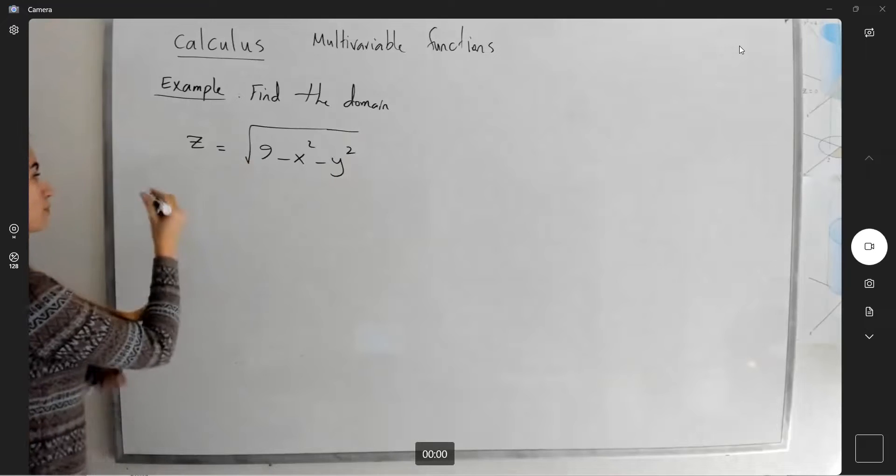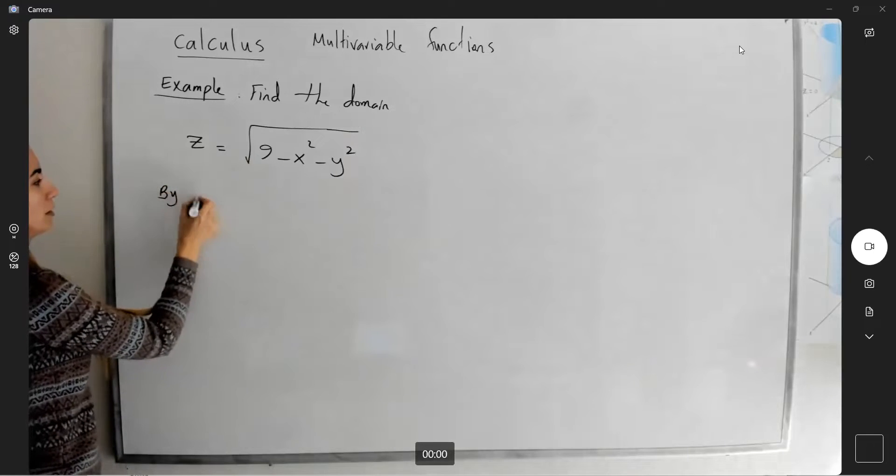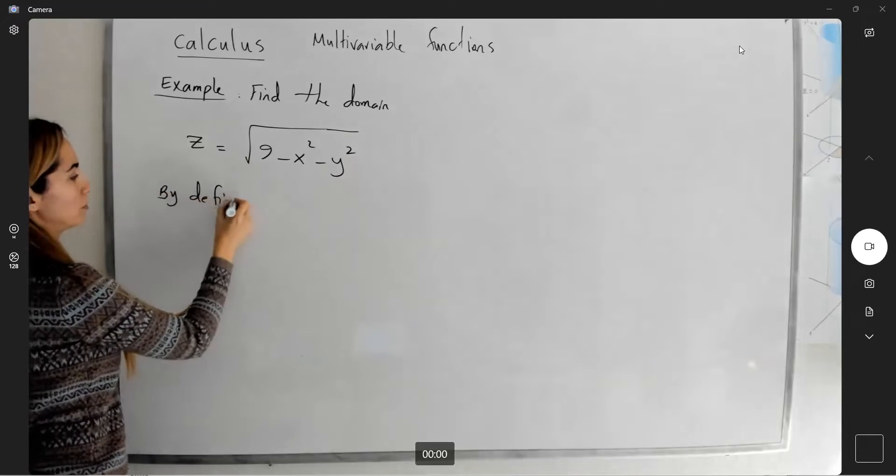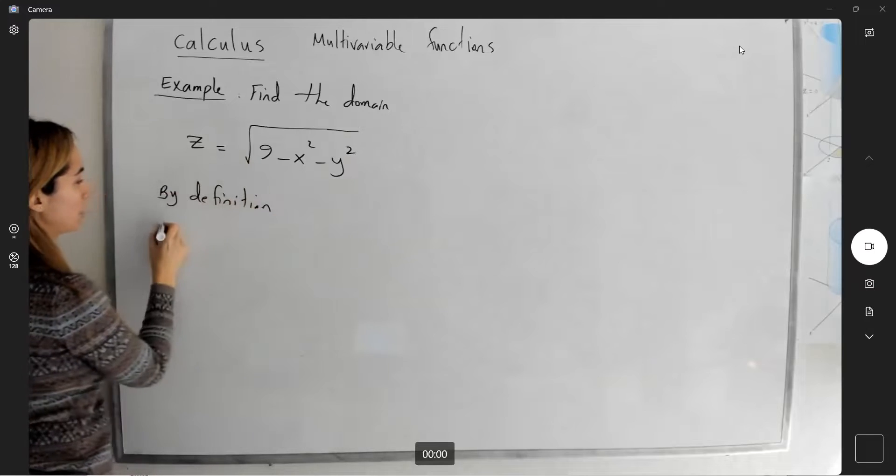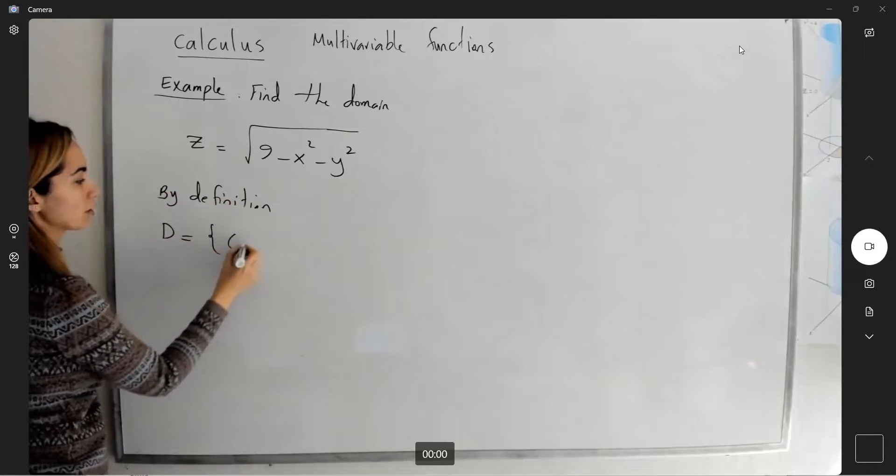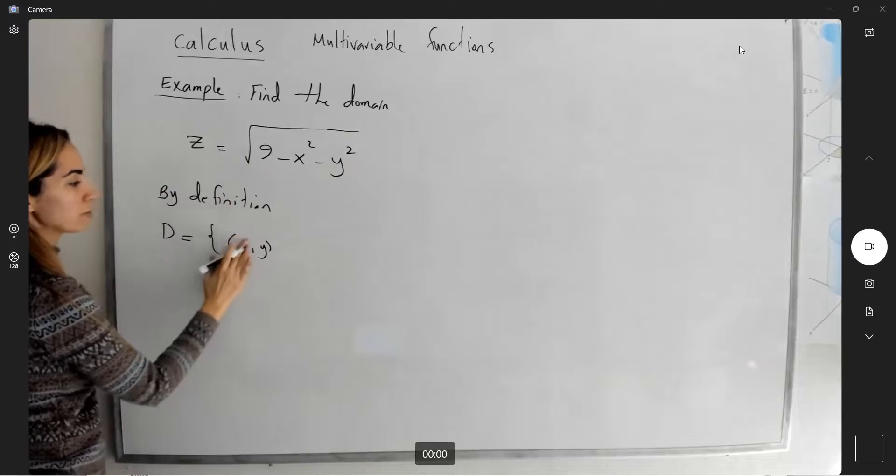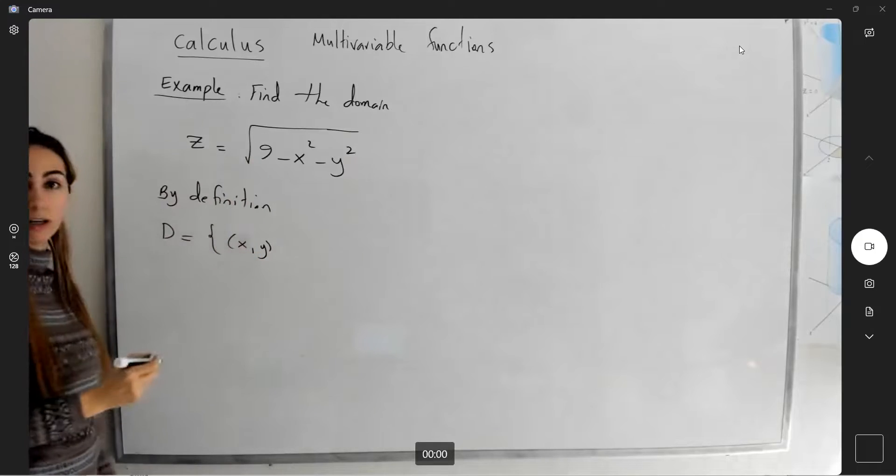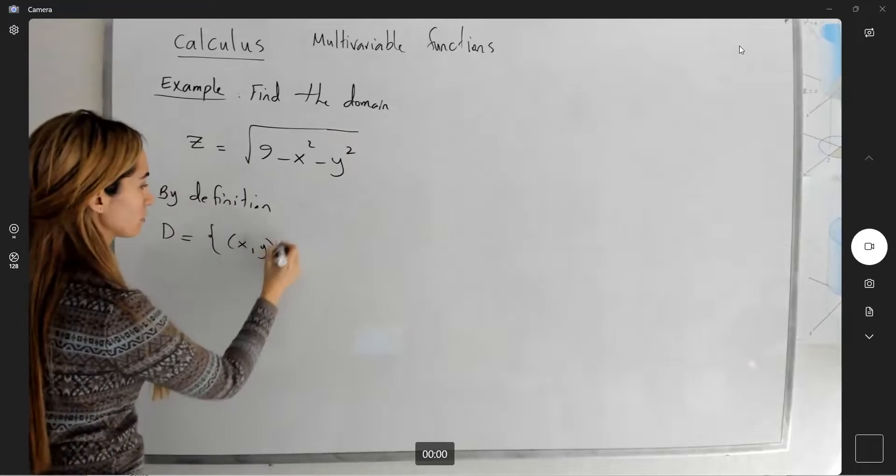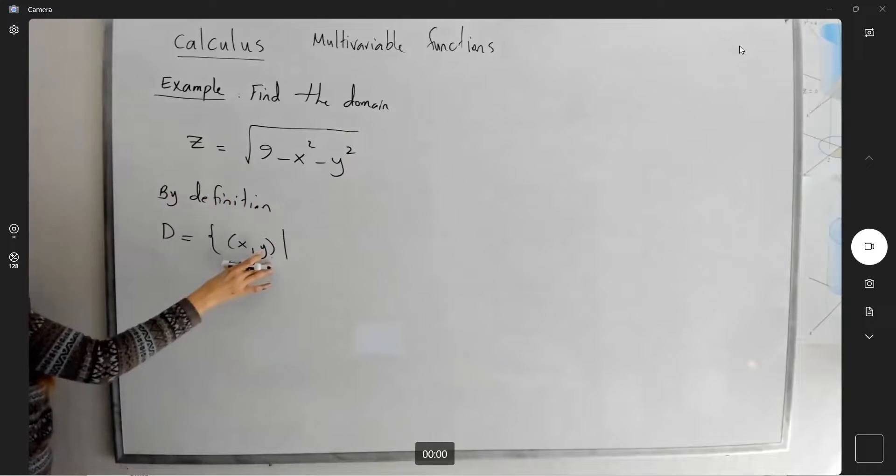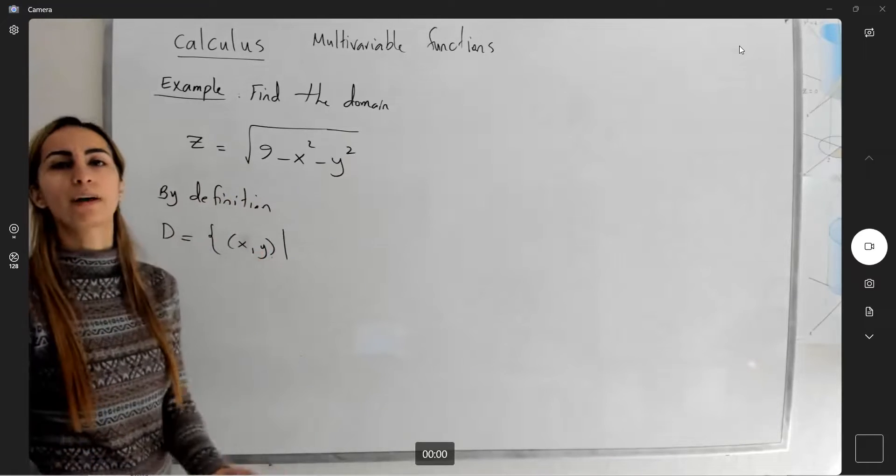So let's go back to the definition. By definition, the domain is equal to the set of all ordered pairs, like x and y, such that they're satisfying some conditions. What is that condition?